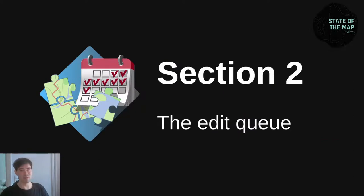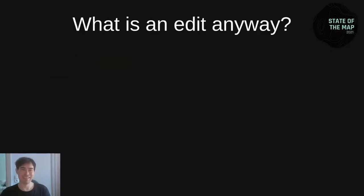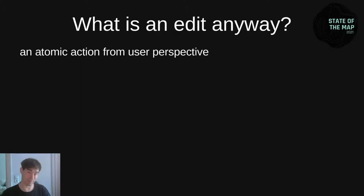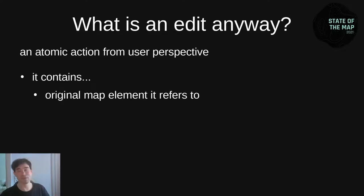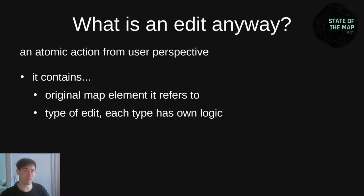What is an edit and how are they applied? An edit is an atomic action from the user perspective — not from the technical perspective — and this is a big difference. An edit contains the original map element it refers to, for conflict checking. Then the type of edit — there are different types: for example, splitting a way, deleting a point of interest, or changing some tags, which is the most common and easiest one. And finally, the diff: the minimal info that describes what is changed.